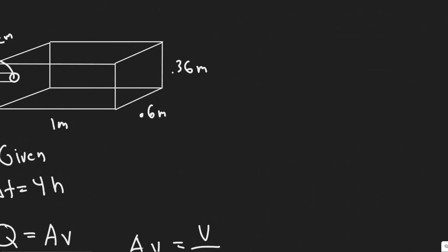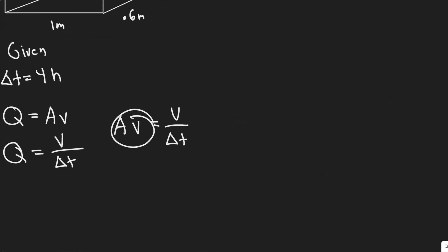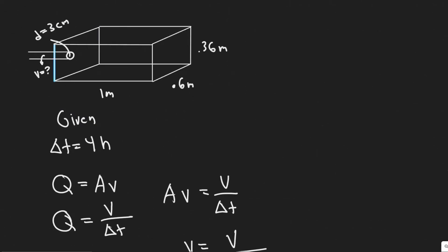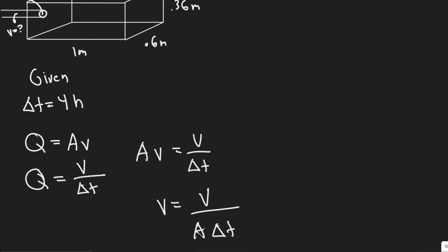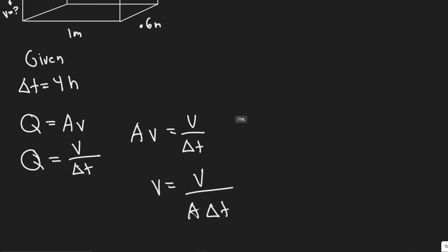The change in time is how often we're changing that amount of volume, which in this case is 4 hours per the volume of the tank. If we want to solve for the flow speed of the water, we just divide both sides by A. So you would have the volume of the tank divided by the cross-sectional area of the tube, divided by the change in time — how long this would take.